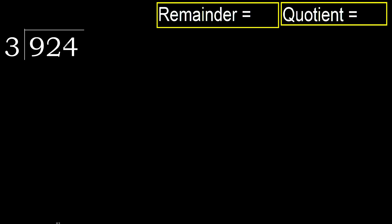924 divided by 3. 9 is not less, therefore we start with 9. 3 multiplied by which number is nearest to 9, but not greater?